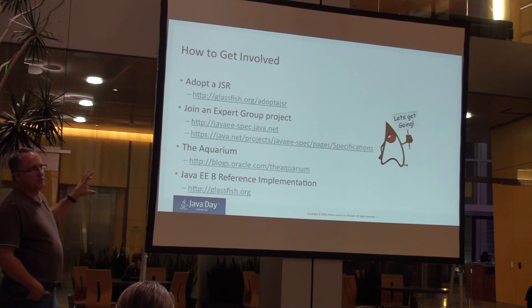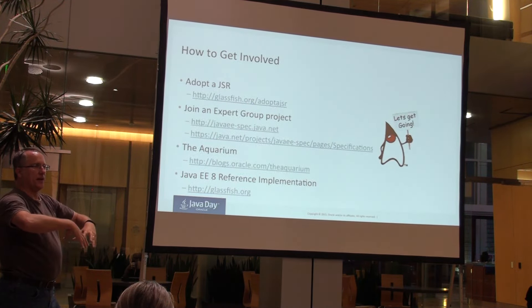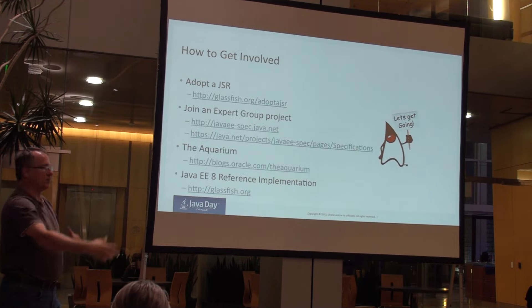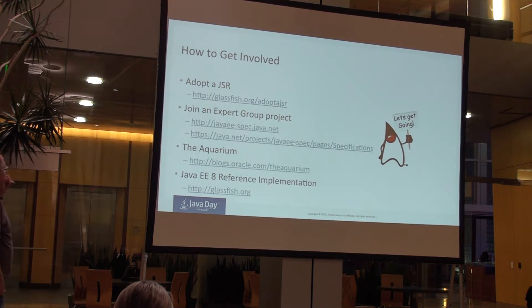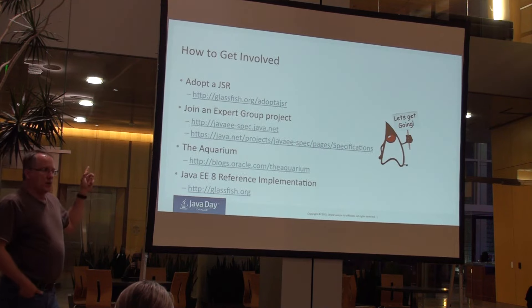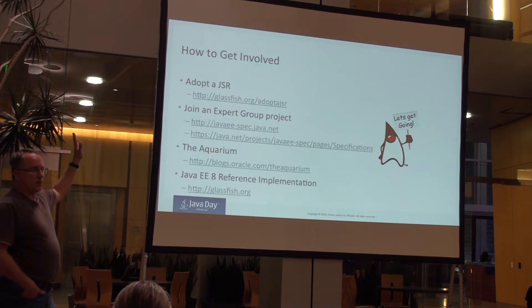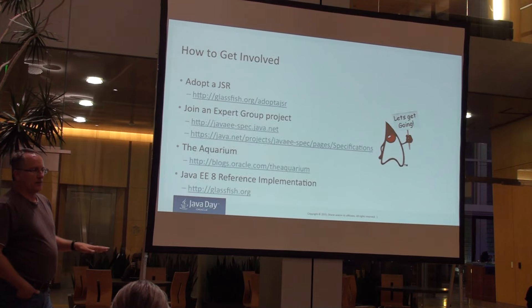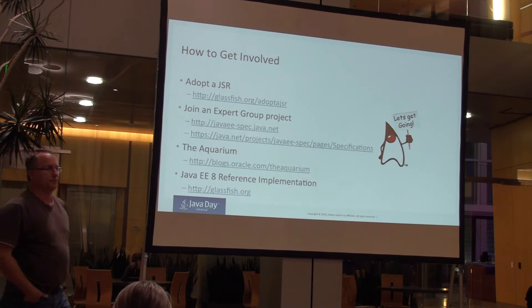You can download the reference implementation for individual JSRs. At some point they'll mature and come together in GlassFish. Probably the easiest way to find specs, open mailing lists, and public tracking sites is to go to jcp.org, search for the technology, and it'll take you to the page with scope, wiki, mailing list, downloads, and all that. Highly encouraged.